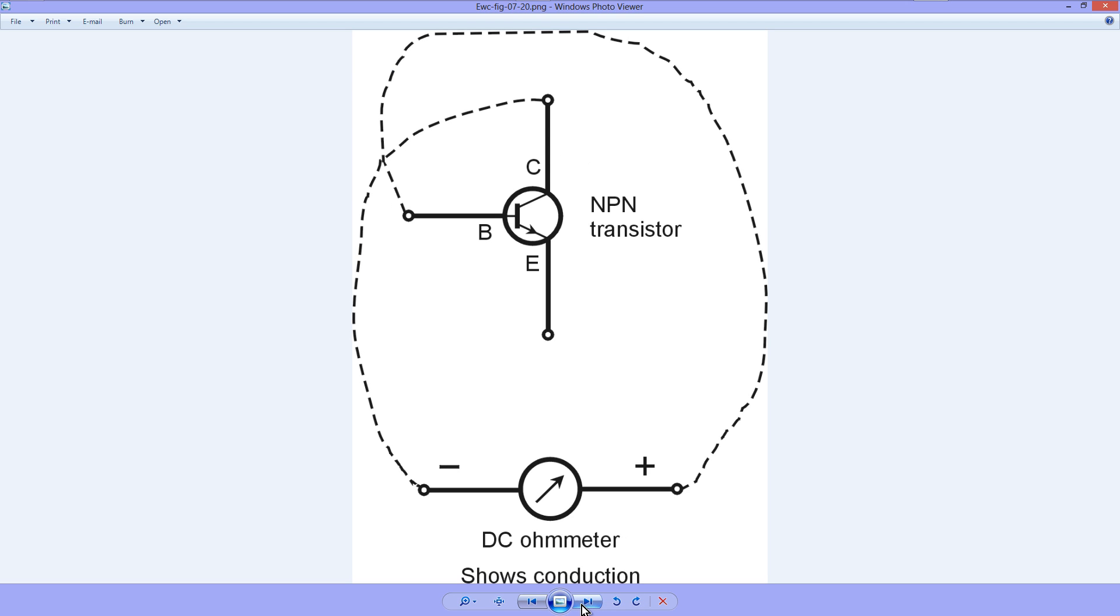Test number three, between the base and the collector. When you connect the negative lead to the collector, electrons should be able to flow through like this. And you should see a few ohms indicating conduction on your meter.